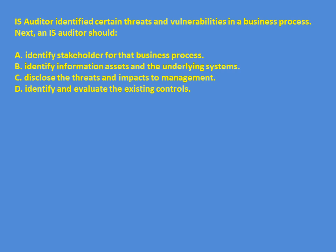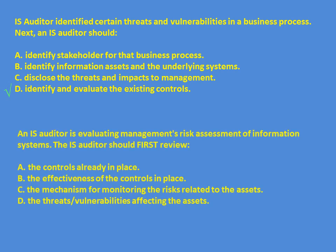Next question: A CISA auditor identifies certain threats and vulnerabilities. What should be his next step — identify stakeholders, identify information assets, disclose threats to management, or identify and evaluate the existing controls? Once threats and vulnerabilities are identified, the next step is to determine what controls are in place. If residual risks are within management's acceptance level, no further action is needed. The answer is D: identify and evaluate the existing controls.